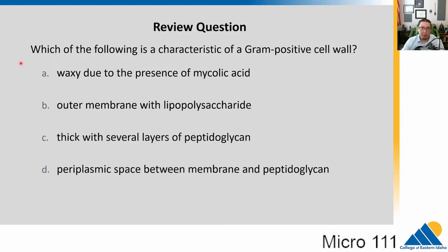Which of the following is characteristic of a gram-positive cell wall? A. Waxy due to the presence of mycolic acid. B. Outer membrane with lipopolysaccharide. C. Thick with several layers of peptidoglycan. Or D. Periplasmic space between membrane and peptidoglycan.